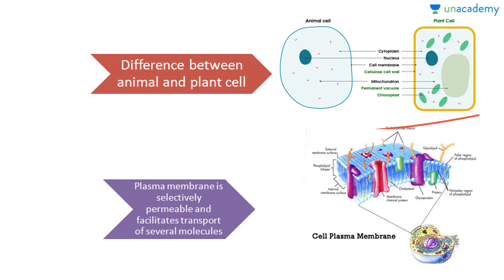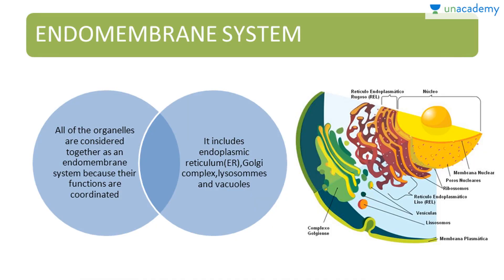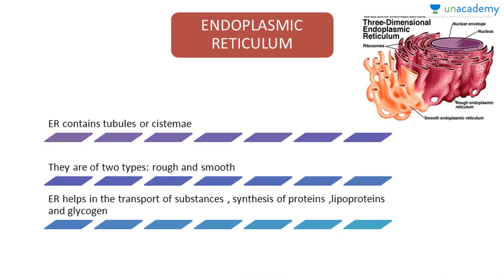The plasma membrane is a selectively permeable membrane that facilitates the transport of several molecules. You can see the plasma membrane and its detailed structure here. Now, the endomembrane system: all of the organelles are considered together as an endomembrane system because their functions are coordinated. The endomembrane system includes the endoplasmic reticulum, Golgi complex, lysosomes, and vacuoles.